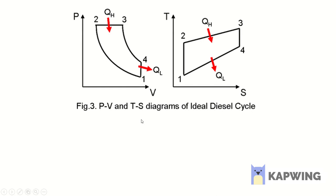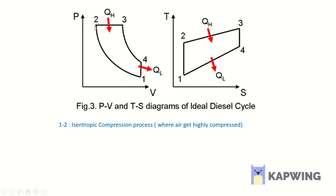From 1 to 2, the air which comes inside the cylinder gets compressed, so the pressure gets increased. Process 1 to 2 is the isentropic compression process.